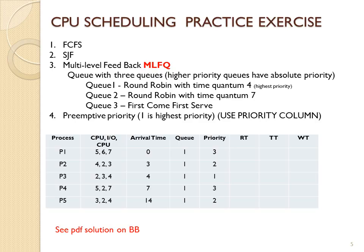This is also similar to your CPU scheduler assignment where processes have CPU–IO–CPU bursts. For example, p1 does 5 units of CPU burst, then goes to IO for 6 time units, then returns to the ready queue and does 7 more units of CPU burst. Take a look at the solutions and ask if you have any questions. Thank you.